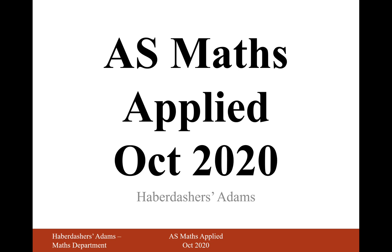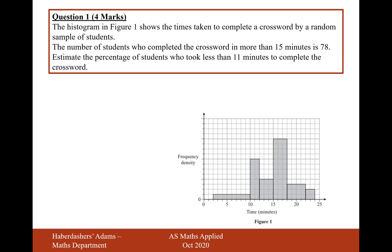Hello there, welcome to the October 2020 Applied Paper. Here we're looking at question 1. The histogram in figure 1 shows the times taken to complete a crossword by a random sample of students. The number of students who completed the crossword in more than 15 minutes is 78. Estimate the percentage of students who took less than 11 minutes to complete the crossword.